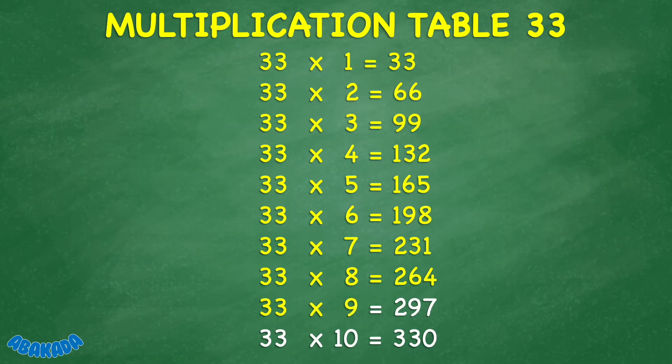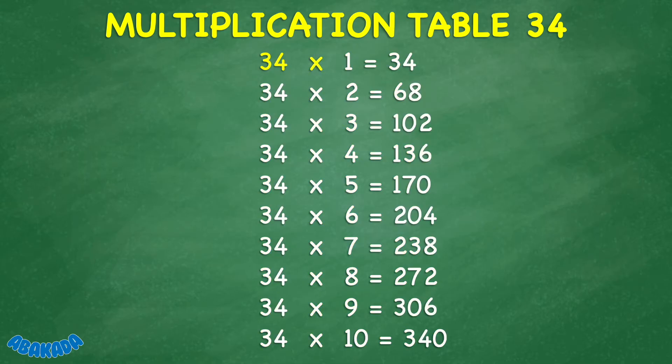33 times 9 equals 297. 33 times 10 equals 330. 34 times 1 equals 34.